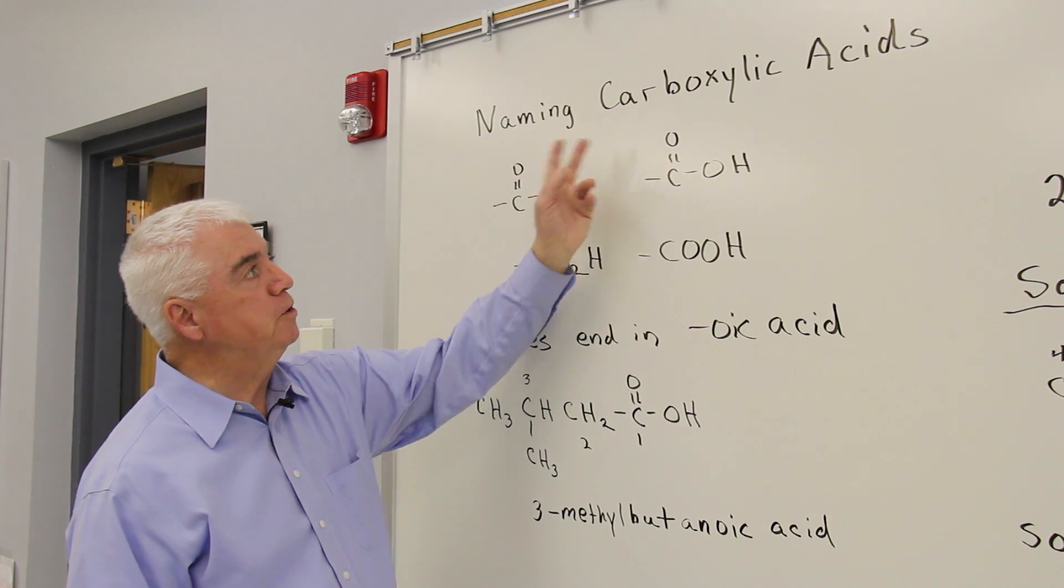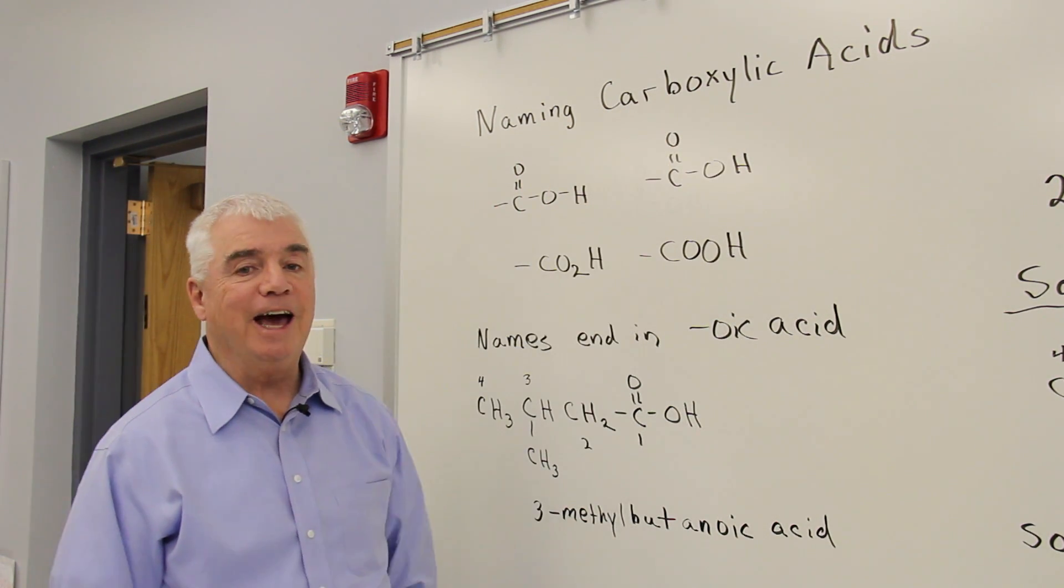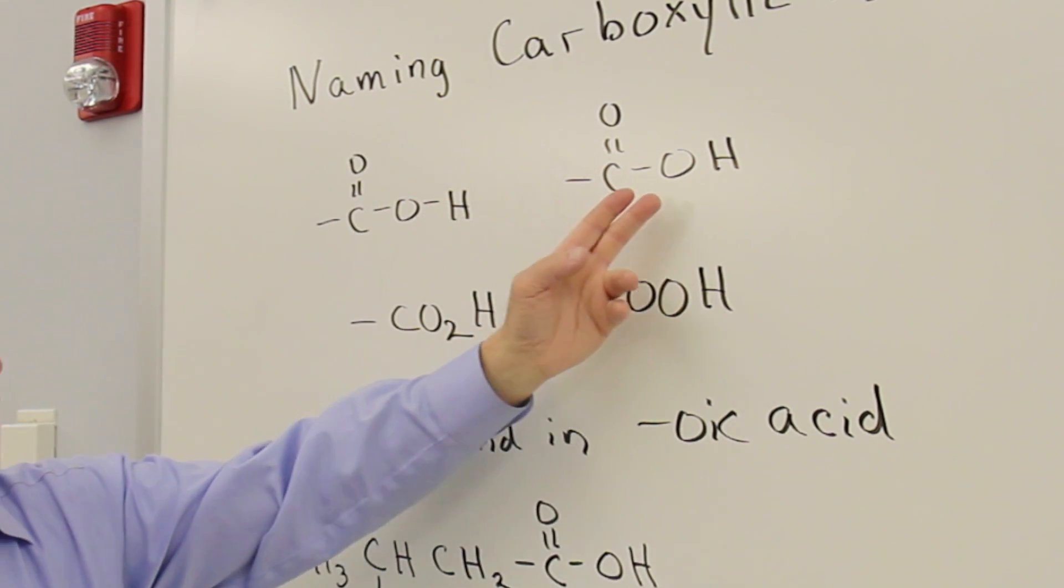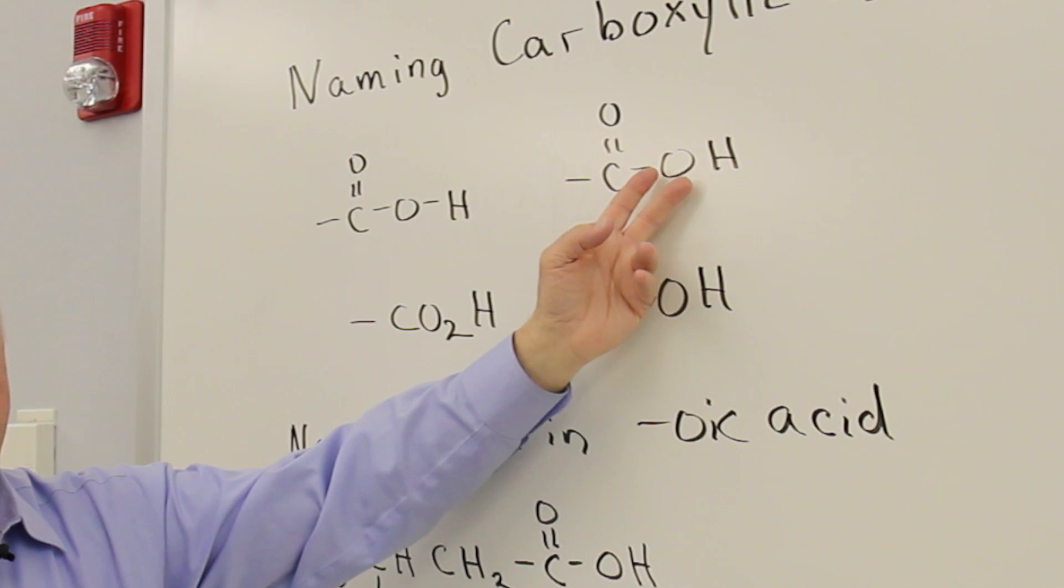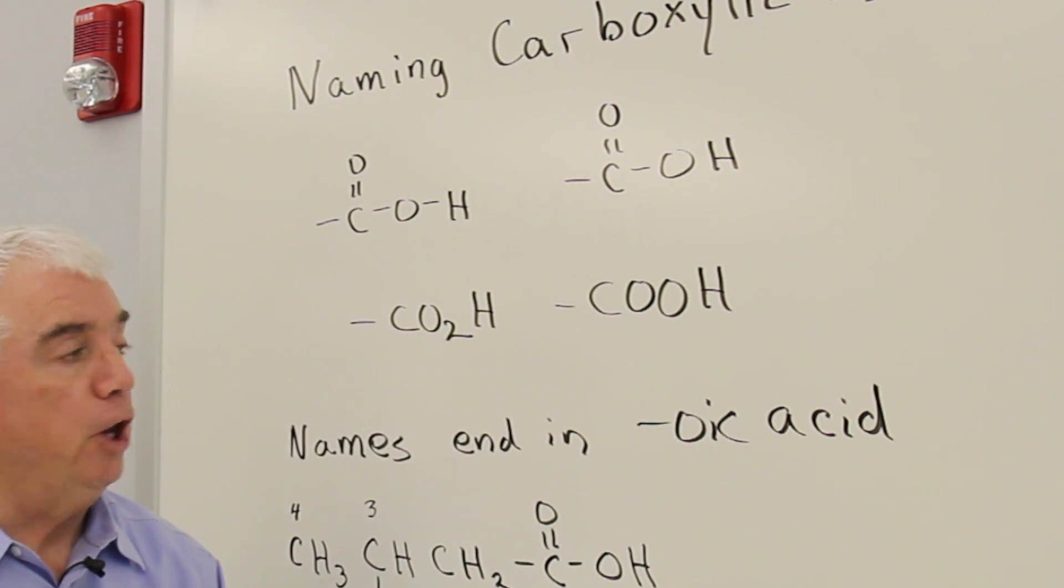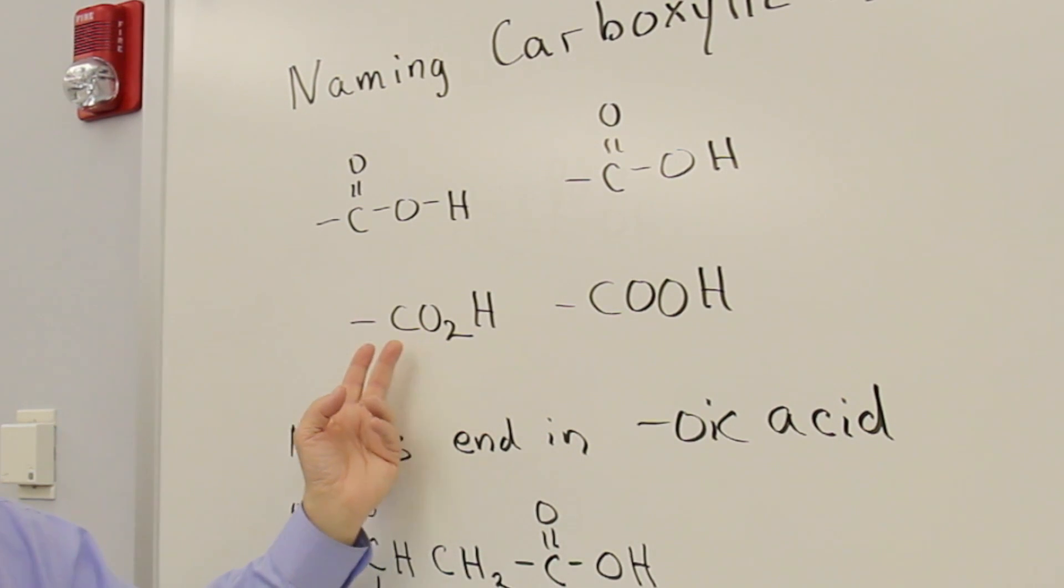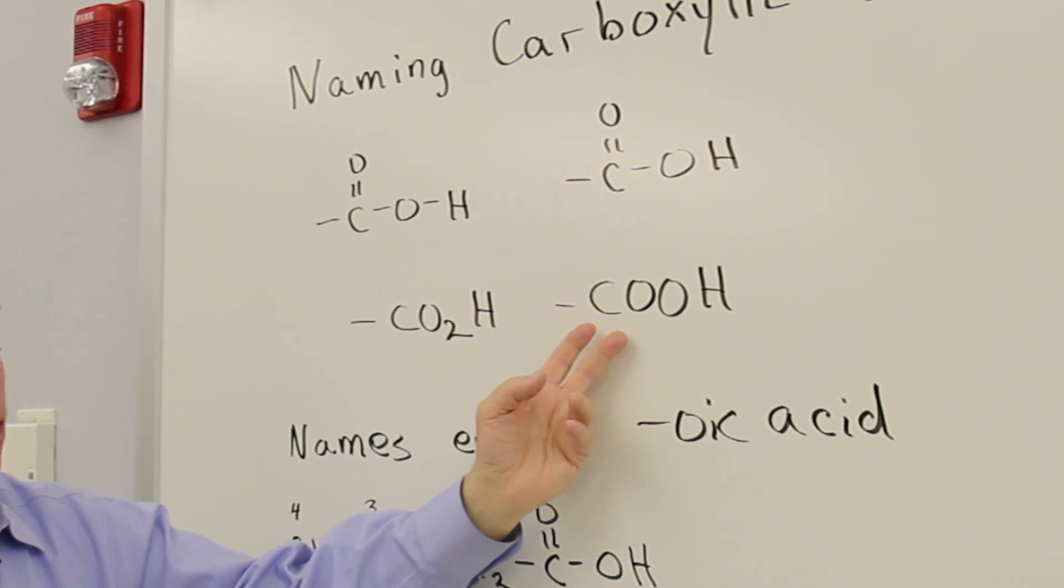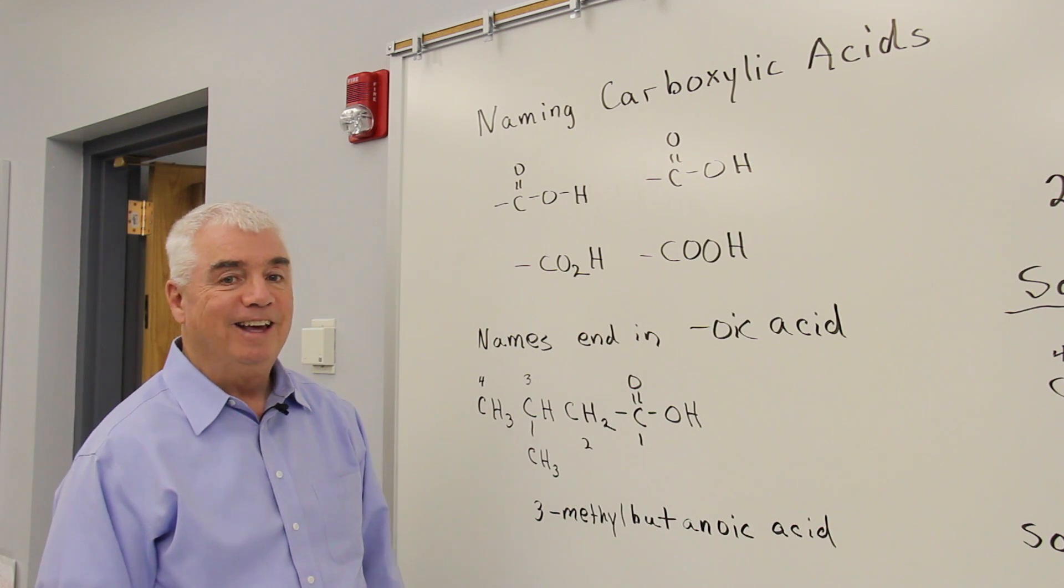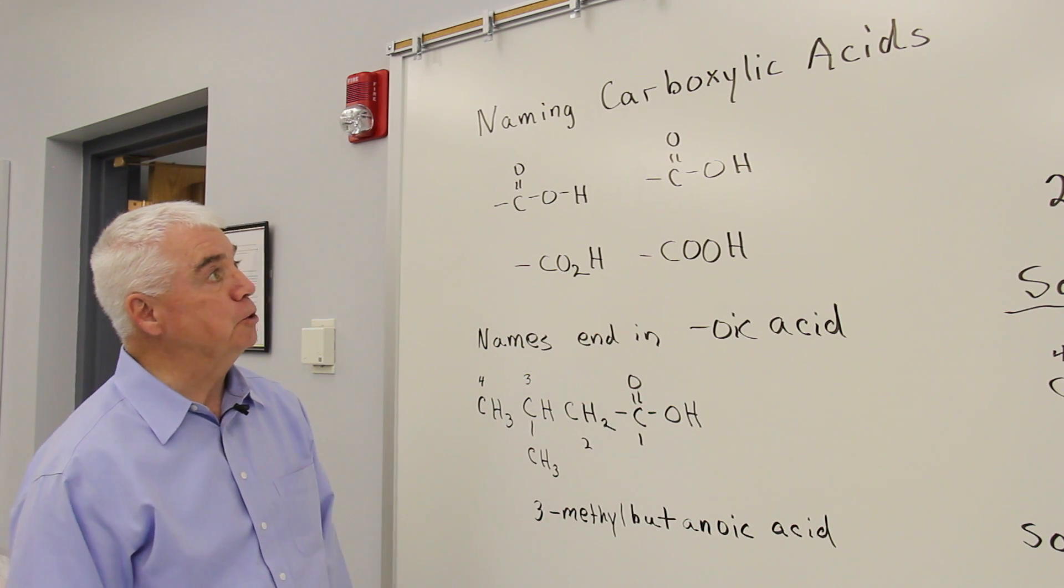A new functional class for us is the carboxylic acids. They have a C double bond OH functional group. Here I've shown all the bonds in that group, and oftentimes we start abbreviating the structure a little bit. Here I've left out the bond between the O and the H. Sometimes we leave out several bonds: CO2H or COOH are acceptable ways of showing the carboxylic acid functional group.